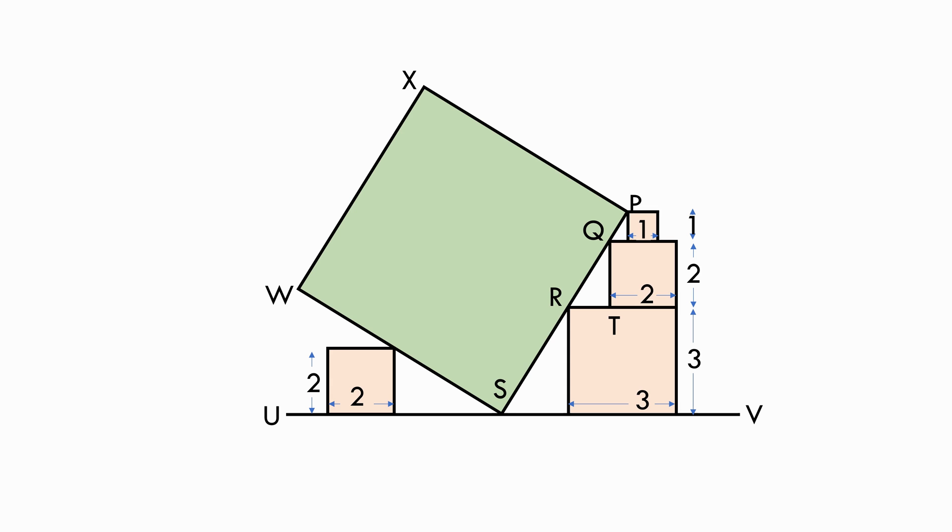Because the question asks for the area of the biggest square, our target should be to find out one side of the square which can be PS. So what we can do is to drop a line from point P perpendicular to the line UV at M.